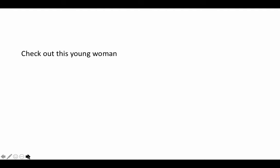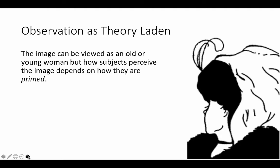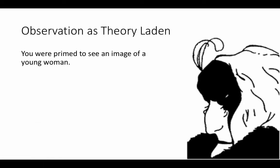Check out this young woman — probably from the 1920s. However, this image can also be viewed as an old woman. How subjects perceive this image depends on how they are primed. This is a famous example in many psychology textbooks and involves a gestalt shift. I primed you into seeing a young woman — here's her dainty little nose, her eyelashes, her jawline, her ear, and her neck.